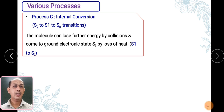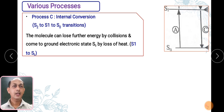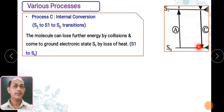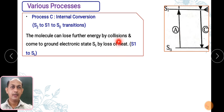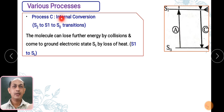The next process, C, is internal conversion — from S2 to S1, or from S1 to S0. The molecule can lose further energy by collision and come to the ground state, losing energy as heat. So in Process C, the molecule comes from S2 to S1, or from S1 to S0, to a lower energy level.